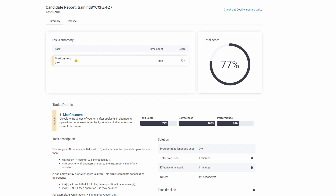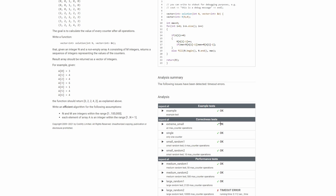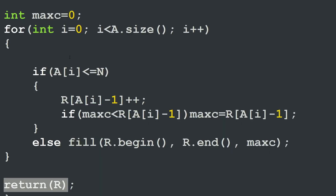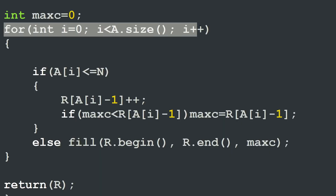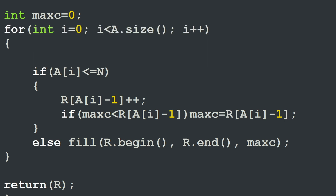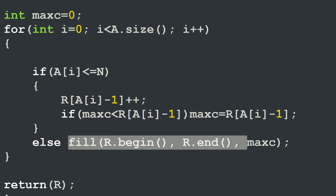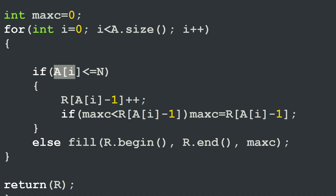All the tests are good, however we have a timeout error at some point. This is completely normal because in our brute solution we are visiting all the elements of array a, but every time we see a number higher than n, we are trying to fill all the elements of the results vector r with the value max c. Which means we have to revisit all the elements of vector r every time we encounter a value of a that is higher than n.